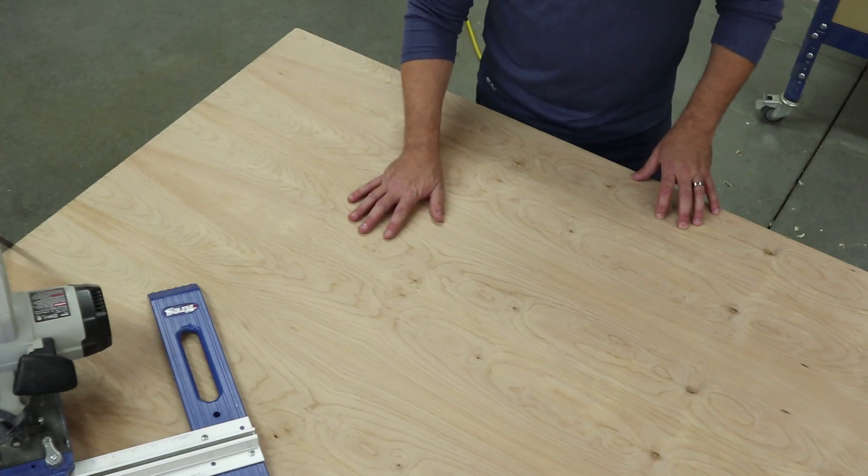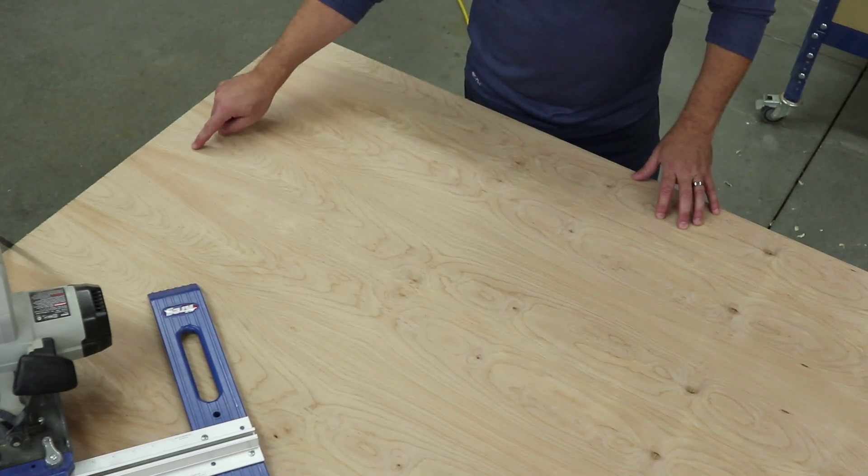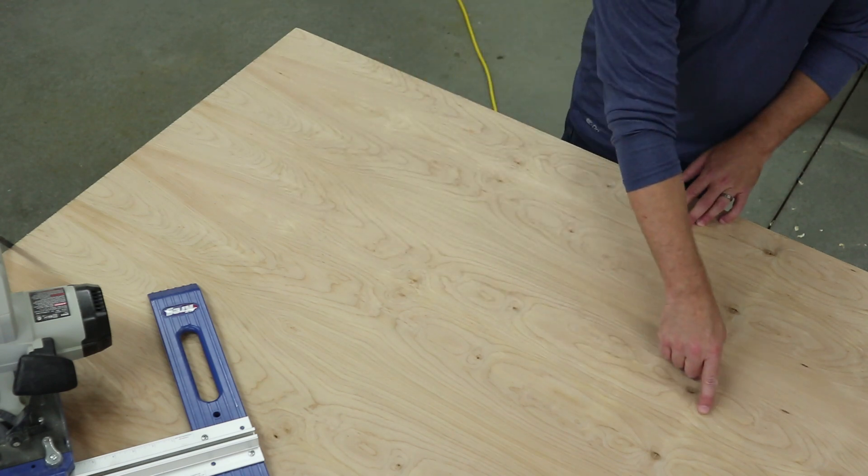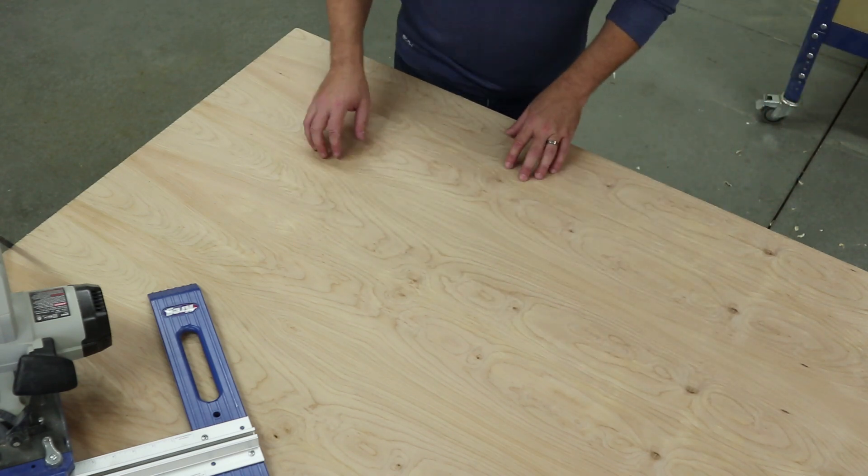When you need to cut plywood and other large sheets down to size, you'll want a reliable way to make long straight cuts. An easy way to do this is with a saw guide.